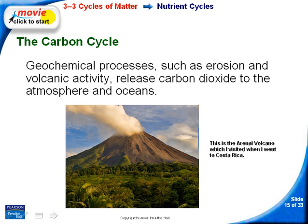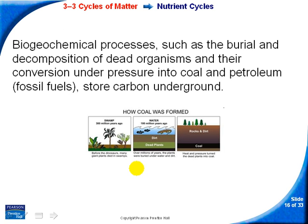Other places where carbon is released into the atmosphere include geochemical processes such as erosion and volcanic activity, which release carbon dioxide. Carbon can also be stored underground in the forms of coal and petroleum — fossil fuels. Essentially, a swamp is buried in dirt and rocks and over time, under heat and pressure, the dead plants are turned into coal.